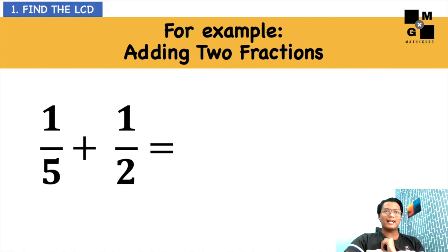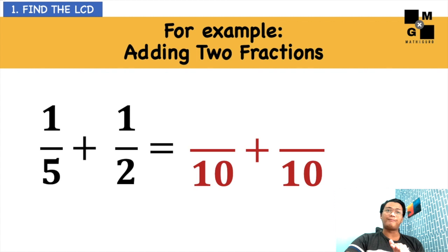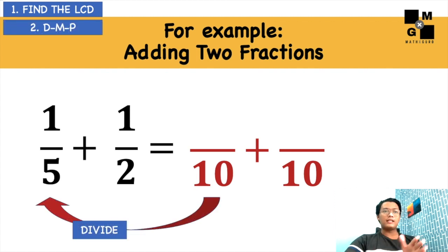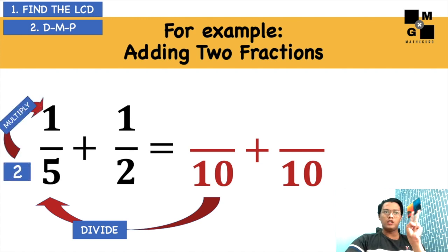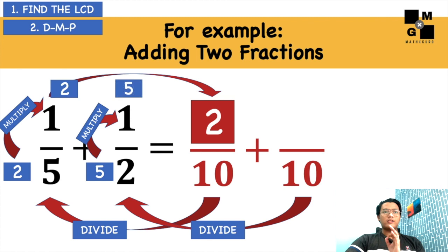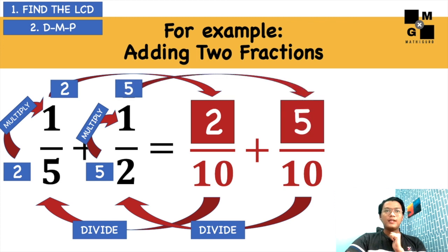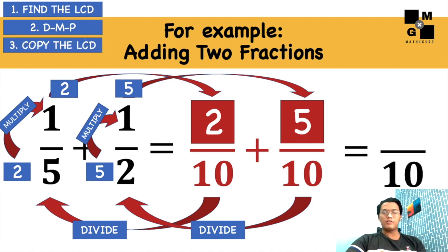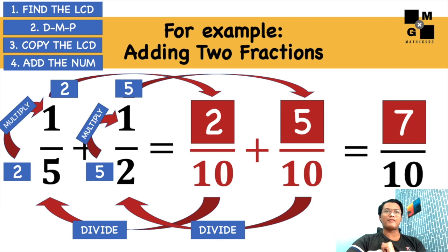Same procedure — get the LCD, and the LCD is 10. Next, DMP: divide, multiply, put. 10 divided by 5 gives you 2; 2 times 1 gives you 2, then put 2 on the corresponding fraction. Next, 10 divided by 2 is 5; 5 times 1 is 5, and then put 5 there. You now have 2 over 10 and 5 over 10. Copy the LCD so you'll have 10, then add the numerators — which gives 7. Final answer is 7 over 10.